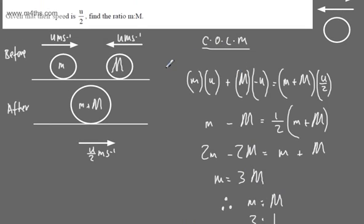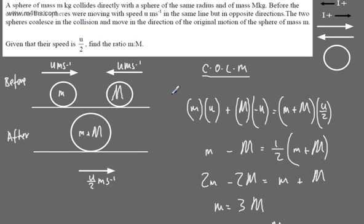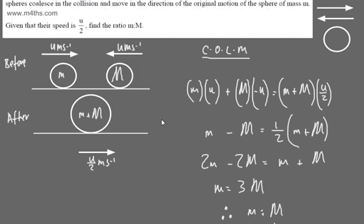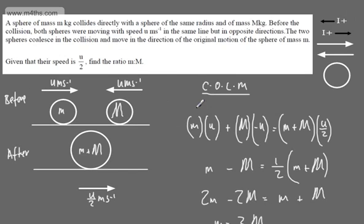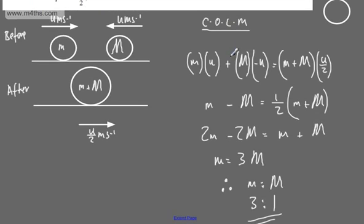With little m and big M it becomes a bit confusing when saying it out loud, but it makes more sense when working through it on paper. That's a nice, straightforward question — we used conservation of linear momentum, discussed coalescing as one combined particle, being careful with the negative u, then solved the equation and wrote the ratio.